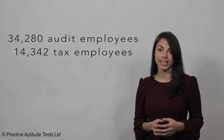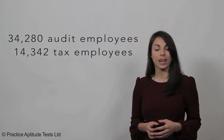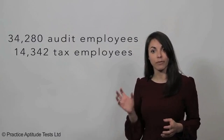So in this example, we have 34,280 employees who work in audit, and we have 14,342 people who work in tax. We need to work out what the simplified ratio is of this.